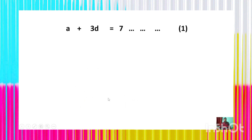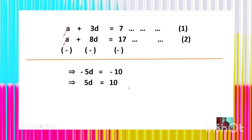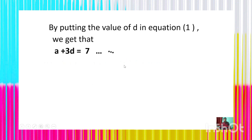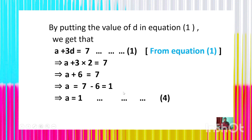We have equation 1: a + 3d = 7, and equation 2: a + 8d = 17. Subtracting equation 1 from equation 2: (a − a) + (8d − 3d) = 17 − 7, giving −5d = −10, so 5d = 10 and d = 2. Substituting d = 2 into equation 1: a + 3×2 = 7, so a + 6 = 7, giving a = 1. The first term of the AP is 1.